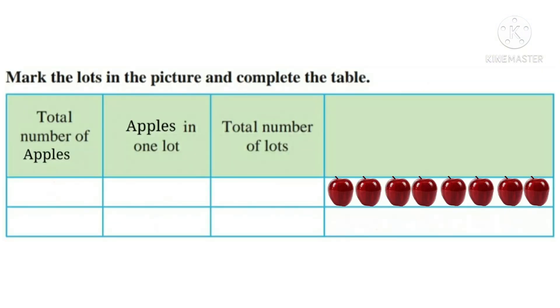Mark the lots in the picture and complete the table. First observe the table very carefully. In the first column there is total number of apples, in the second column apples in one lot, and in the third column total number of lots. Now students, we have 8 apples. We are going to make groups of 2 apples. In one lot there will be 2 apples.